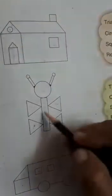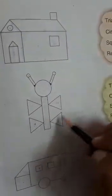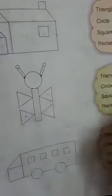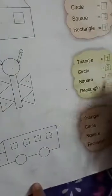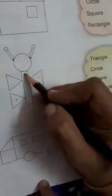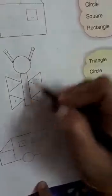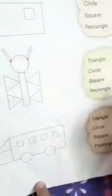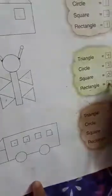Square — like this, this is a square. Find out the square in this picture. There is no square, so we will write here 0. Rectangle. 1, 2, 3. 3 rectangles.